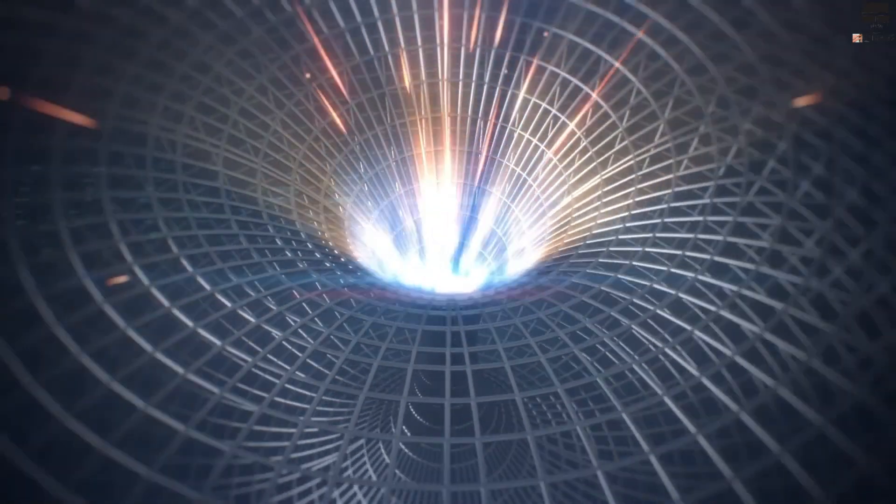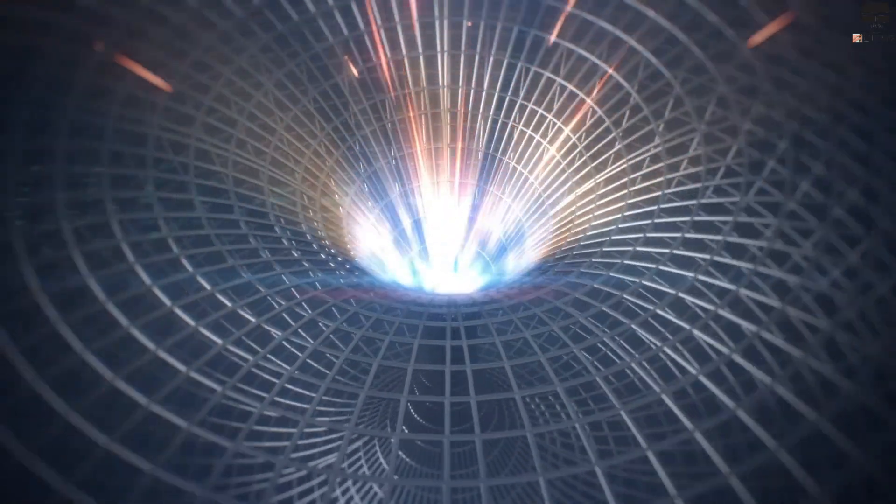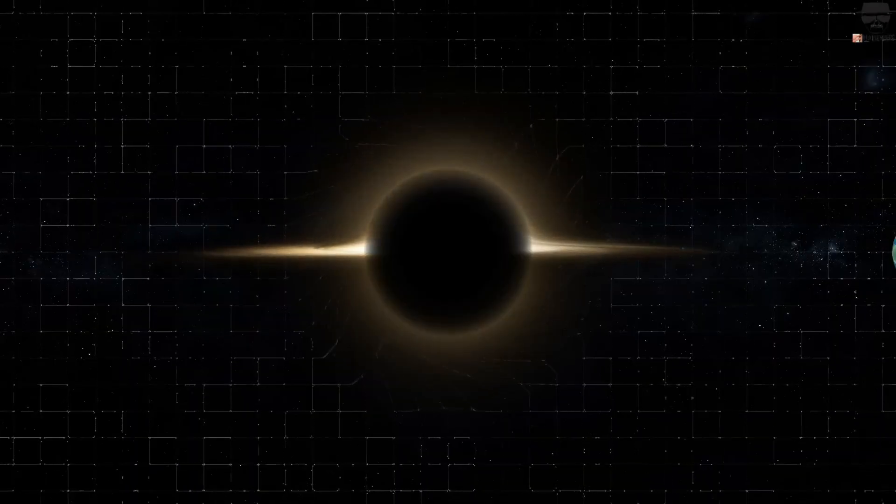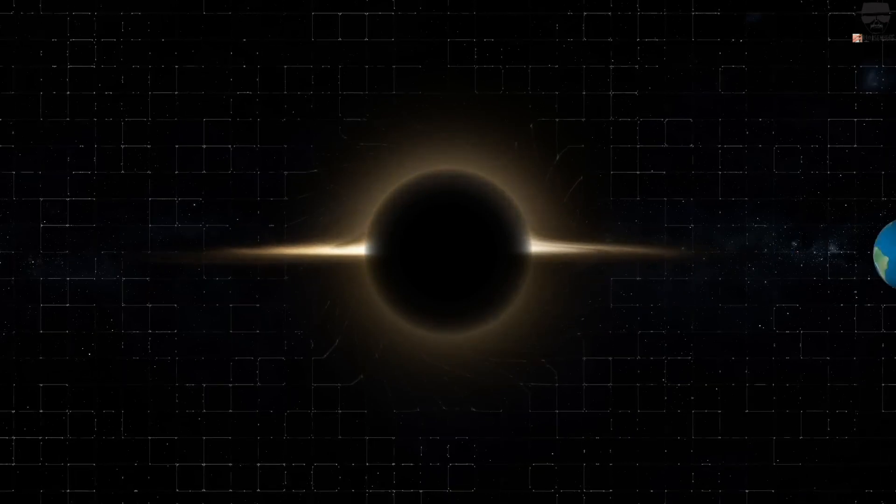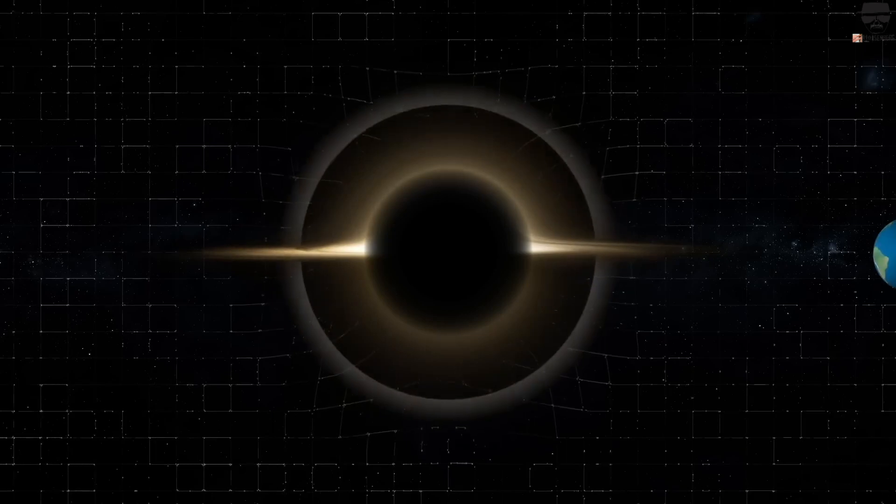Schwarzschild had created an equation of a completely static black hole with no charge or change. This is an external black hole, that is, a black hole that does not change in size and has always existed.